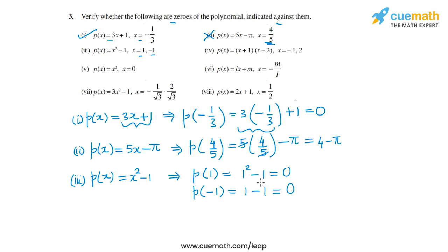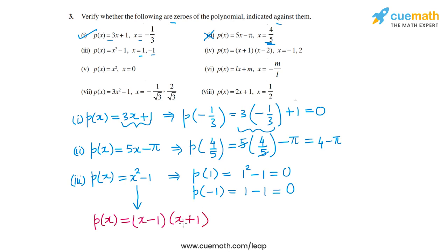So both 1 and -1 are zeros of this polynomial. You could also verify this by factorizing x² - 1. The factorization is (x - 1)(x + 1), and from this factored form you can immediately see that both 1 and -1 are zeros. So in part 3, both values are zeros of the given polynomial.